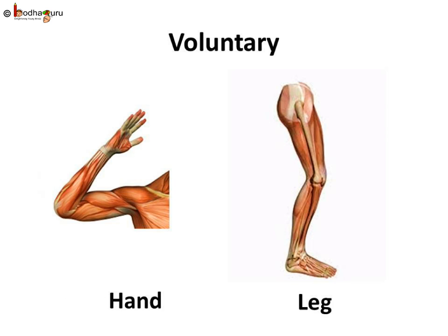Voluntary muscles are the ones that we can control. Most of them move our bones around. If you want to run, walk, ride a bike, wave your arms around, or eat your favourite sandwich, it is your voluntary muscles which move your arms, legs, and body around. But they can't do that unless your brain sends the right message to the right muscles.